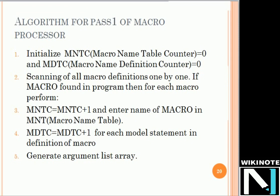There are two passes for the macro processor. We will first see the algorithm for pass one — how we are going to process macros. The first step is to initialize the MNTC, the macro name table counter, which contains the names of all macros available in our program. We initialize it with the value 0. Second, we initialize one more counter called the macro definition counter (MDTC), also initialized to 0. After that, we scan the entire program for macro definitions one by one.